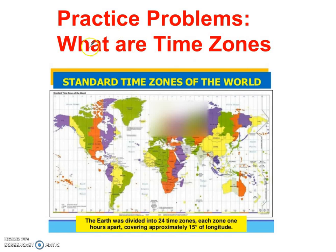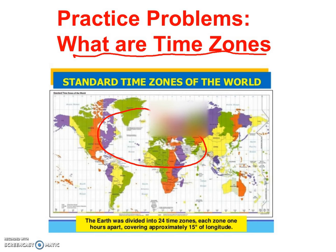Welcome to the last practice problem set for what are the time zones? Those are the zones of time that move through the axis of the Earth, and there are 24 of them, because there are 24 hours in one rotation.